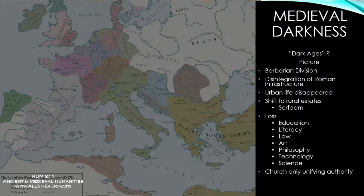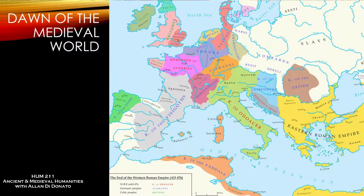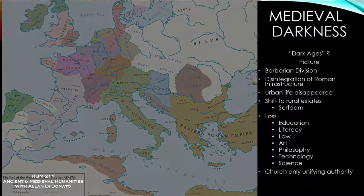Later, in the early 17th century, a cardinal by the name of Caesar Baronius coins the Latin phrase 'saeculum obscurum,' meaning 'dark age,' when talking about a particular period between the 10th and 11th centuries — not even the early Middle Ages. It's going to be adopted for the early Middle Ages later, particularly picked up during the time of the Protestant Reformation.